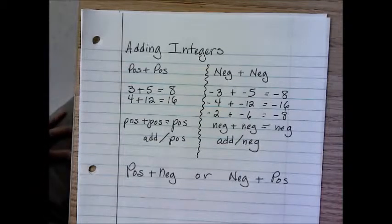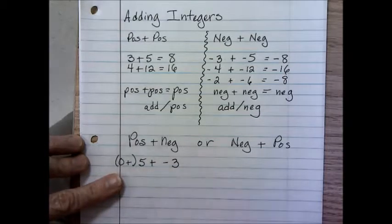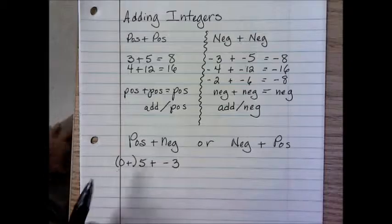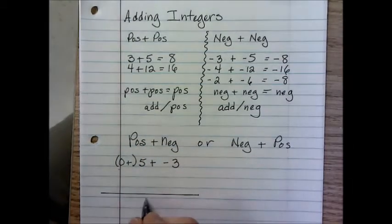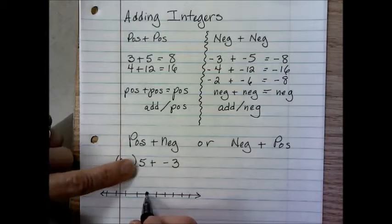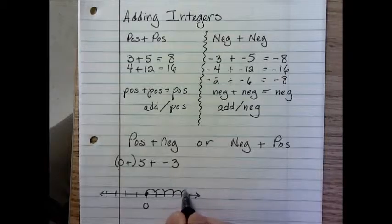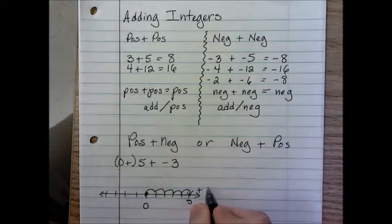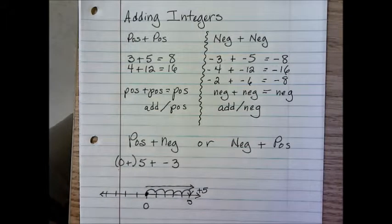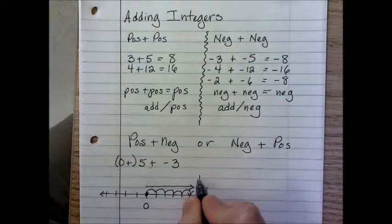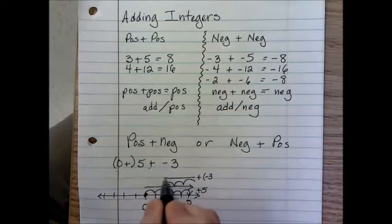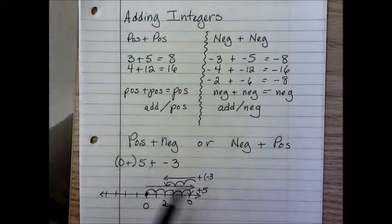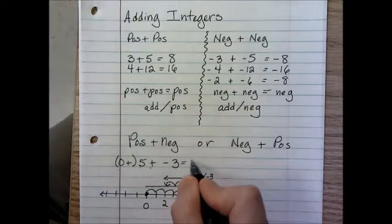It gets a little more complicated when we start adding a positive plus a negative, or a negative plus a positive. Let's take a look at adding 5 plus negative 3. There really is an imaginary zero in front of this expression — we just don't write it, but it helps with understanding these problems on the number line. We are always starting at zero.